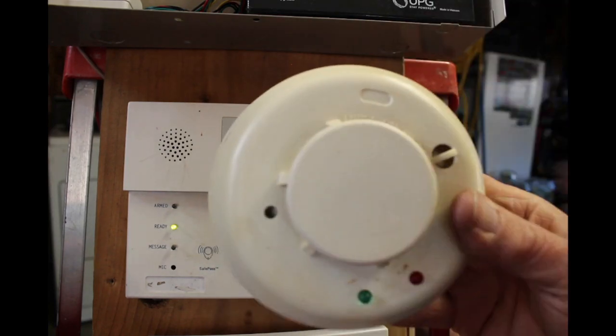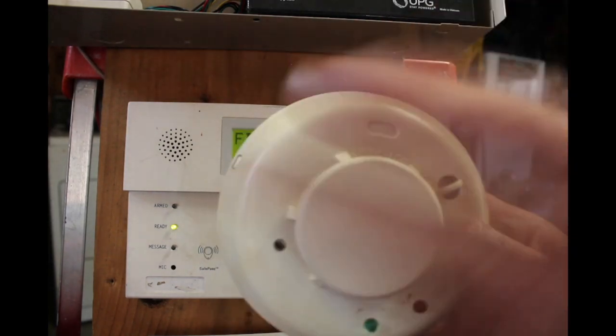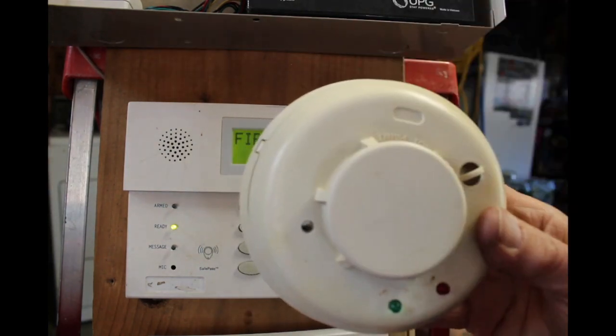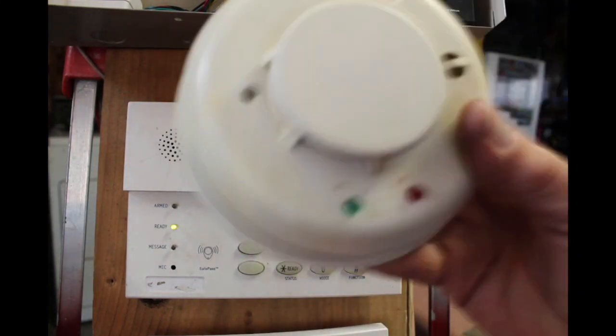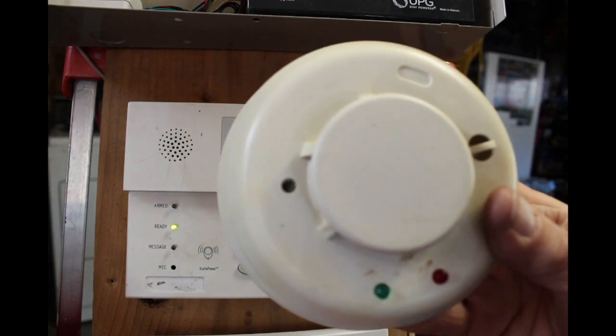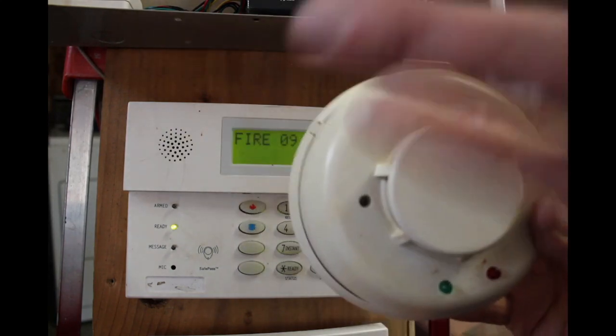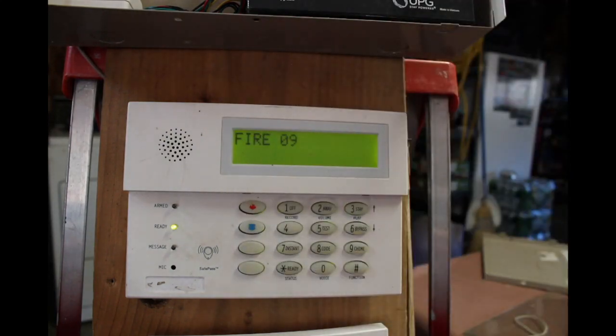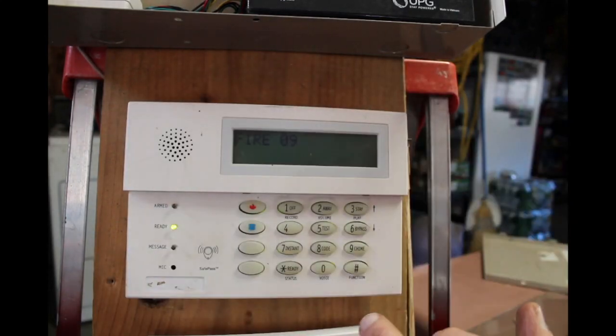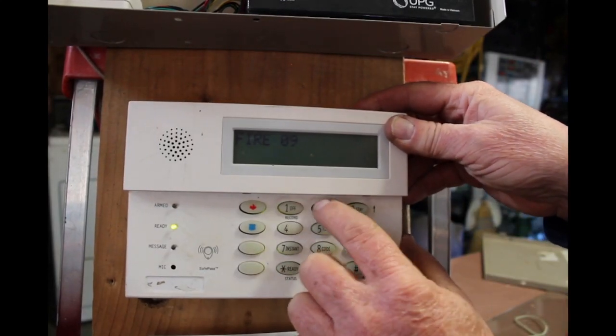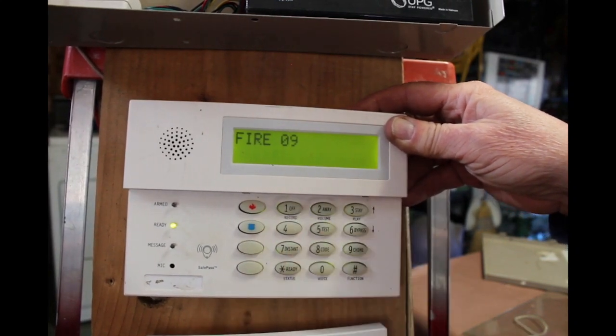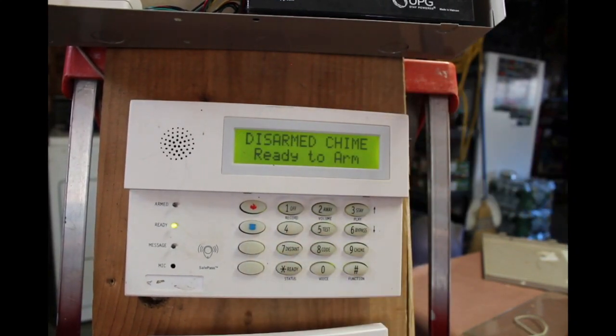You actually have to go out there and blow your hat at it or something like that to get the smoke away from it until this will shut off. Just by hitting your code and off will not shut this off. This will keep on going until you clear the air around it. Okay, now to totally reset your system after a fire alarm event, just hit your code and off again. 1-2-3-4 off. And that's it.